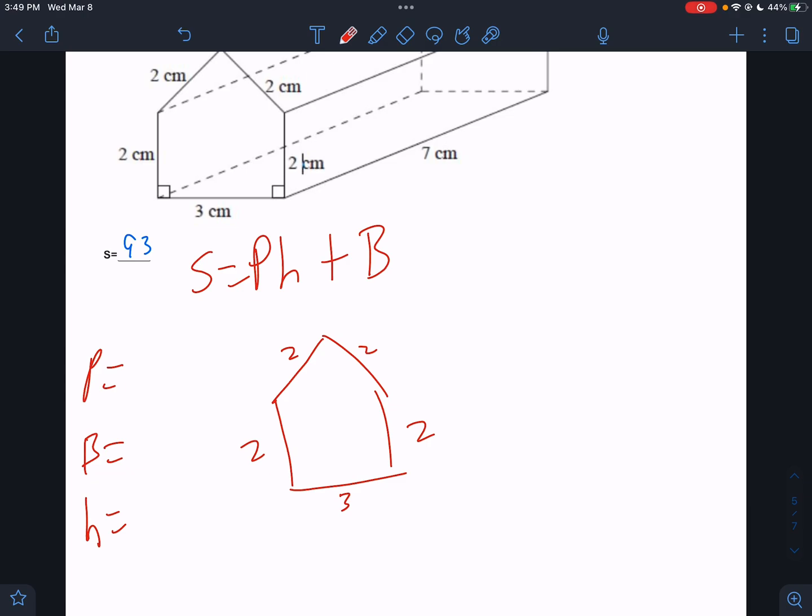Okay. So the perimeter, not too bad. 2, 4, 6, 8, 11. That would be 11. The height, front to back, is 7. But we need the area.